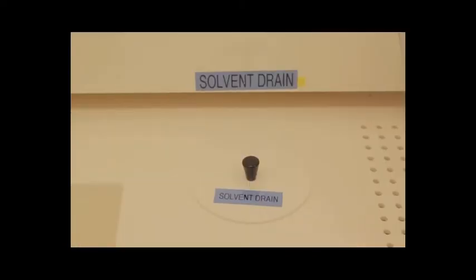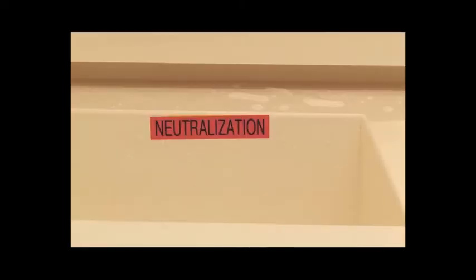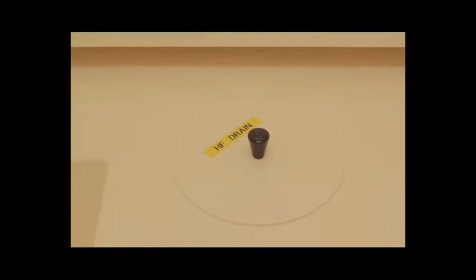There are five different types of chemical drains in Micronova. These are called solvent, neutralisation, HF, posistrip and resist waste. Drains are always labelled.